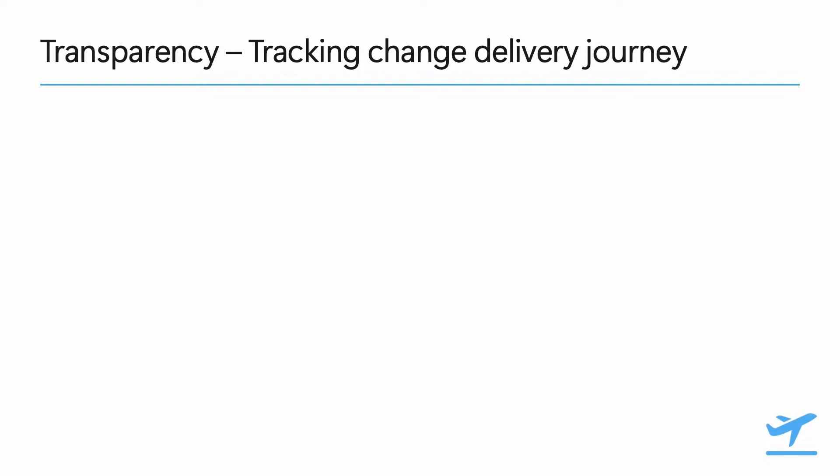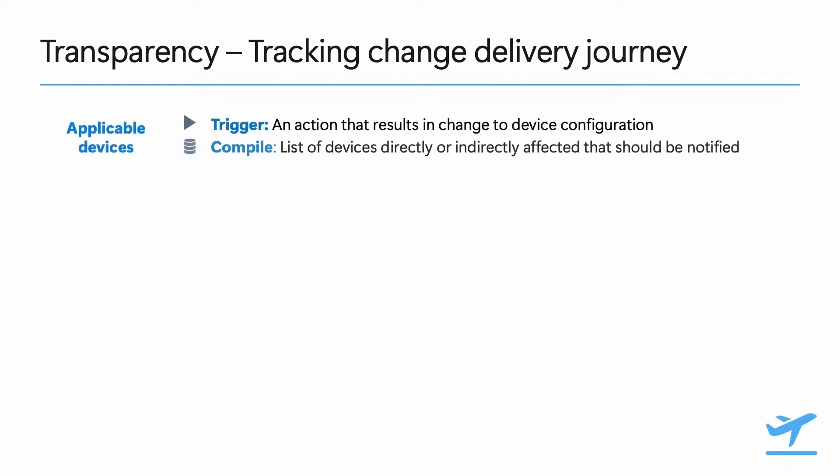Let's look behind the scenes at what happens when a change occurs. Intune is constantly listening for sources of changes. When a change occurs, we compile a list of devices that are directly or indirectly affected — I like calling that number "applicable devices" — and it's basically your denominator: how many packages we expect to deliver as a result of a change.